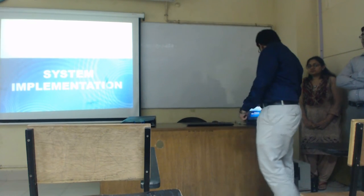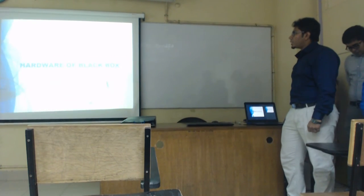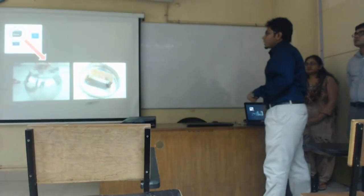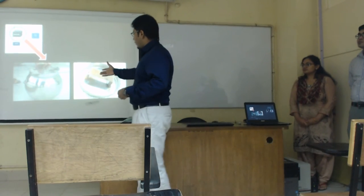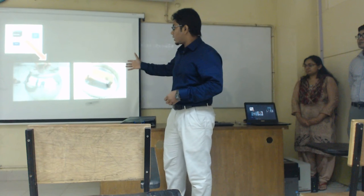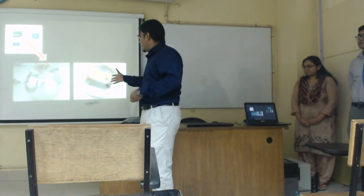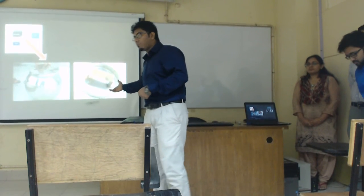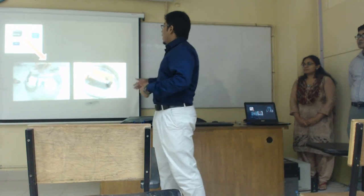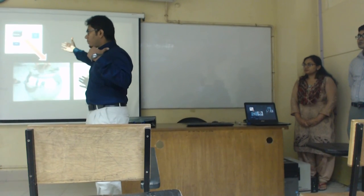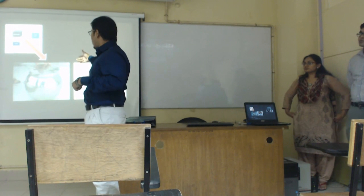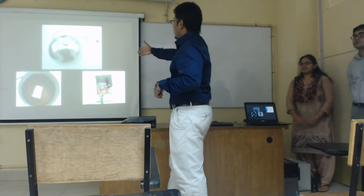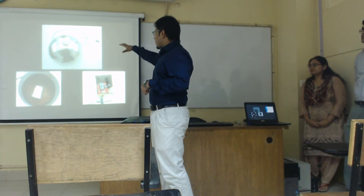I am going to talk about the system implementation of our project. I will start with the hardware of the black box. As you can see in the diagram, we have made a stainless steel sphere-like shape casing for enclosing the black box circuit. Beneath the lid, we have placed a battery holder that can hold the full circuit. This is the actual casing and this is the upper side view.